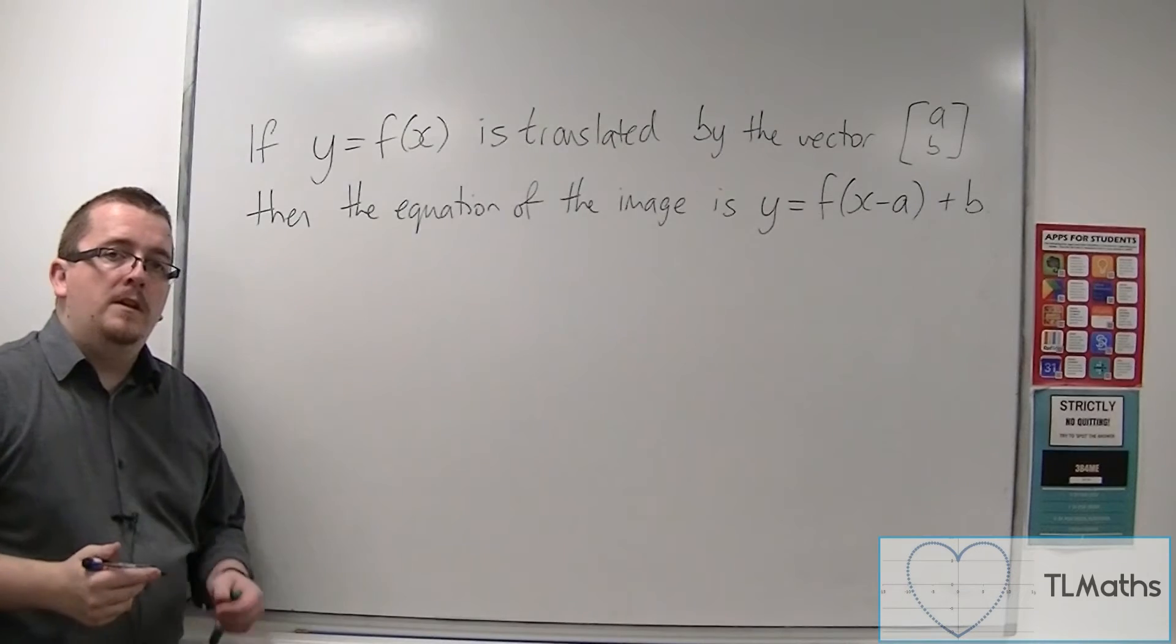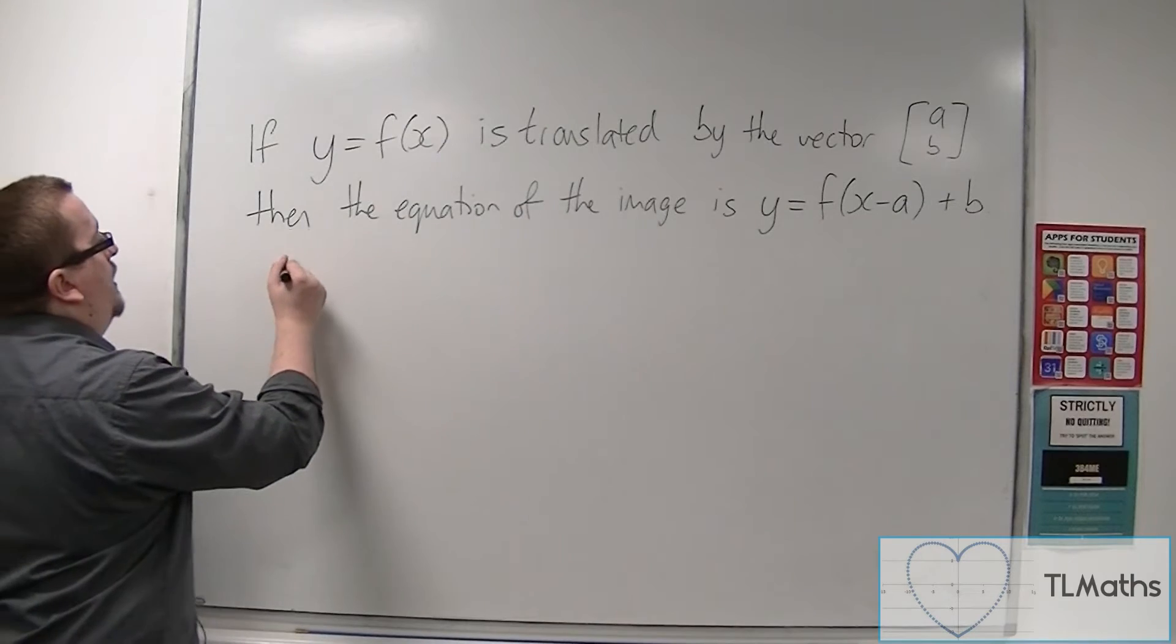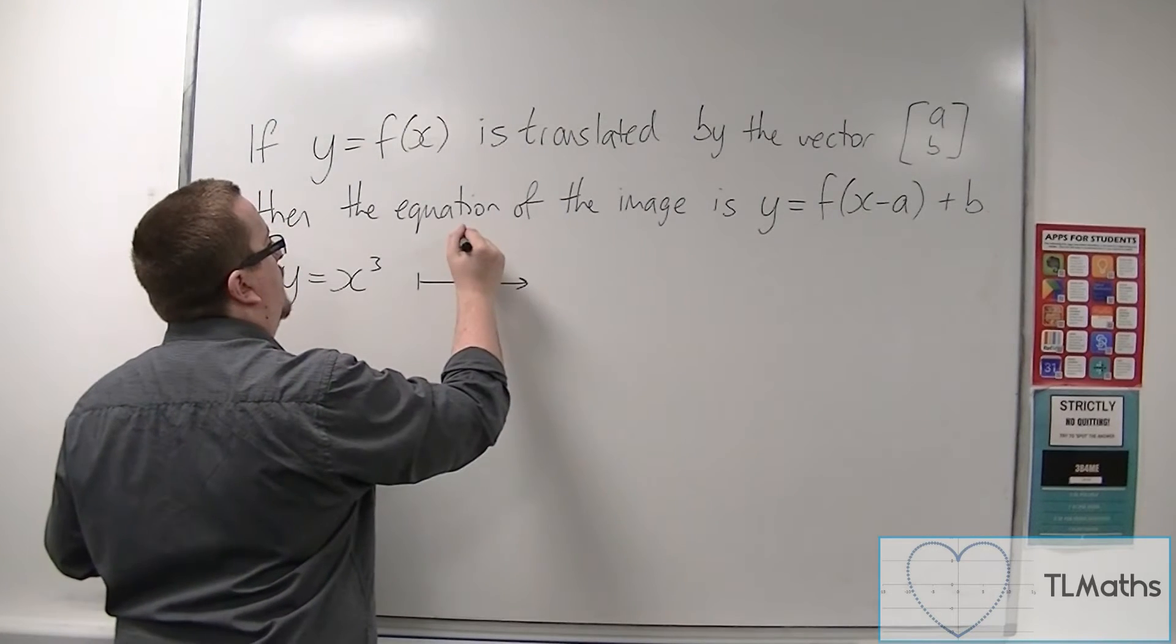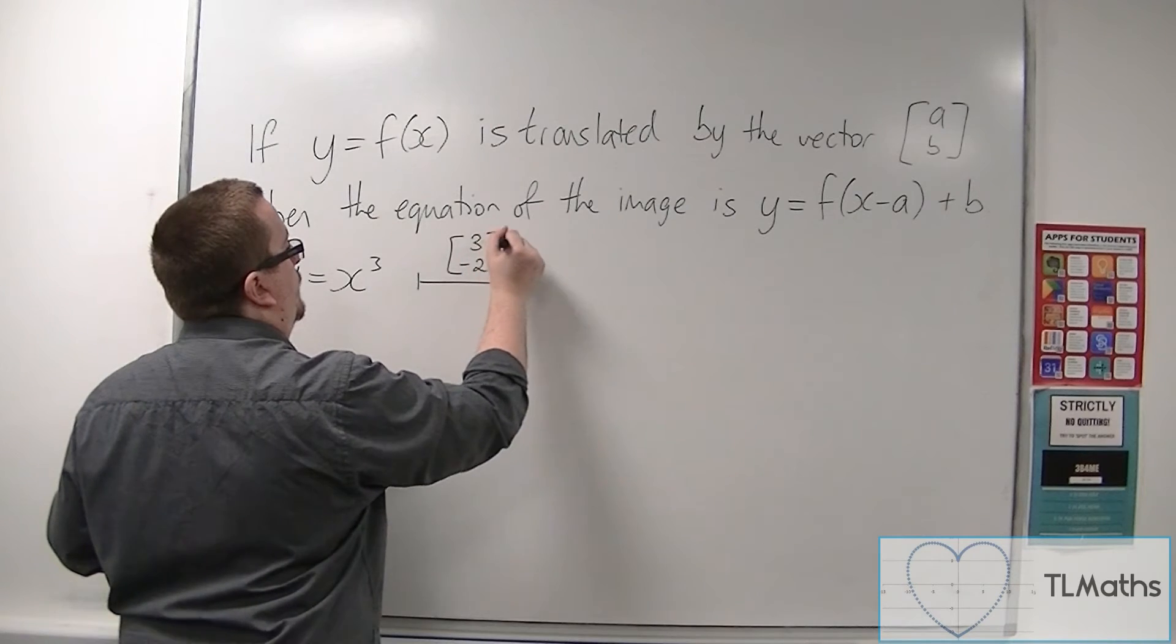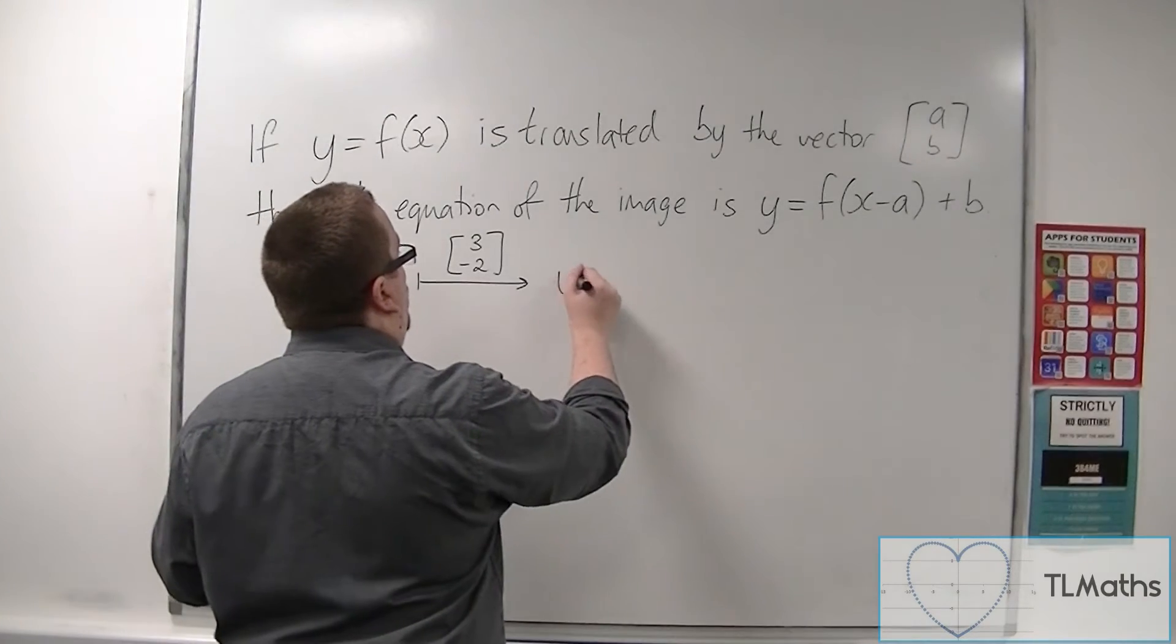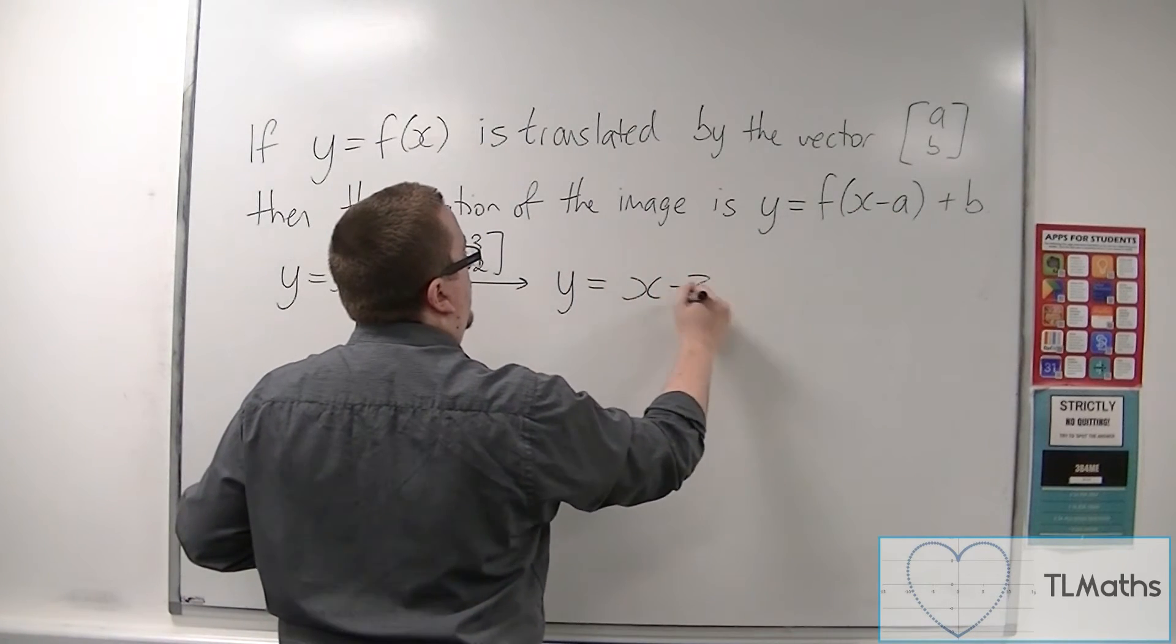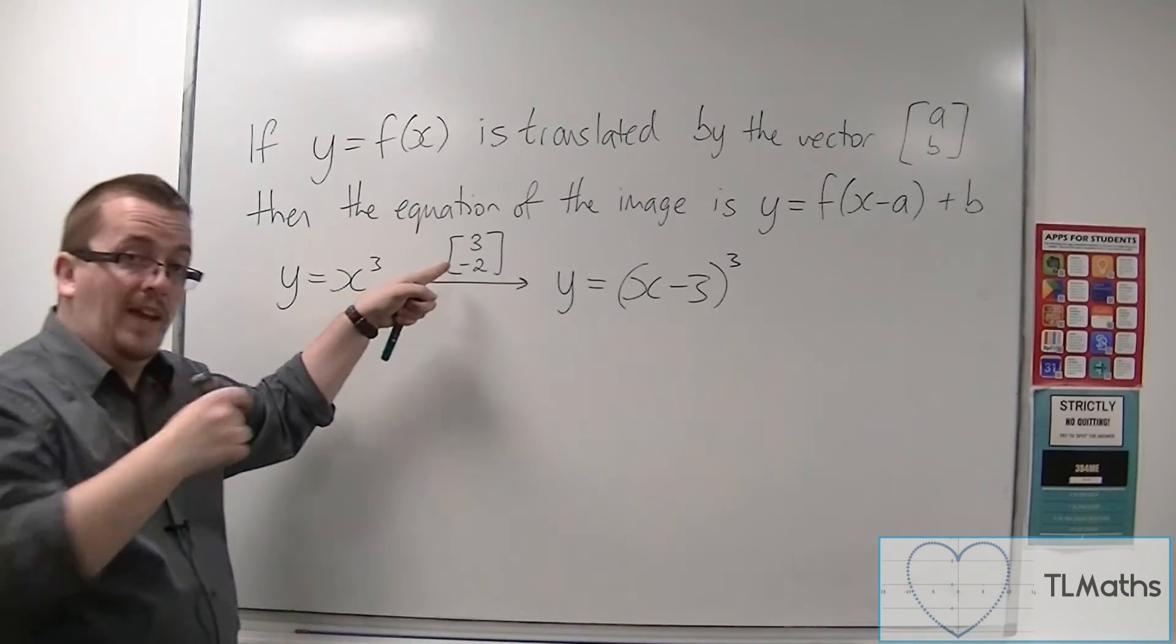So in other words, if y equals x cubed is translated by the vector, let's say (3, -2), then its image, the equation of its image is y equals—well, we've got x minus a, so x minus 3, and that's what's cubed now, take away 2.